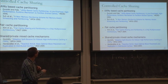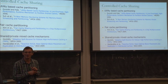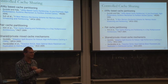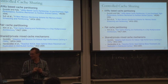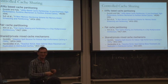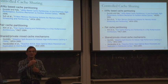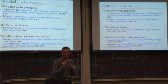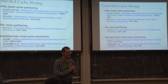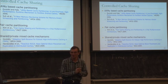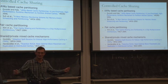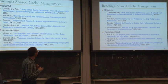Controlled cache-sharing approaches include utility-based cache partitioning. The key idea: give more cache to the application that benefits most from it. Look at the marginal utility of a cache block for each application and allocate that block to the application with the highest marginal utility. In practice, this is done on a way basis rather than individual block basis.